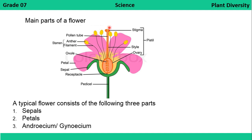Inside the stigma there is a small tube running from the top down to the ovary, called the pollen tube. The main parts of the flower are: pedicel, receptacle, sepal, petal, ovary, and ovule. Then the male part — the stamen — and the female part — the pistil. The three main whorls of a typical flower are sepals, petals, and the androecium or the gynoecium.